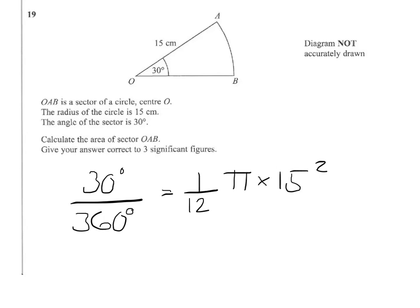The one-twelfth comes from 30 over 360, and π times 15 squared is the area of the circle with radius 15.